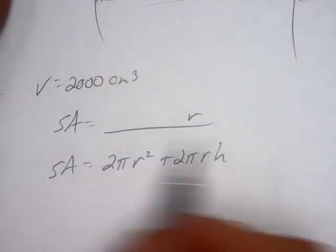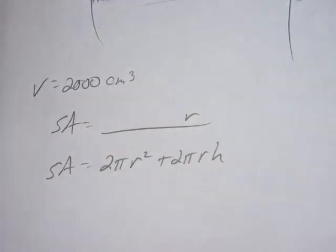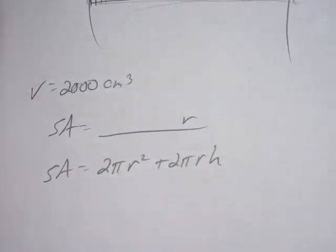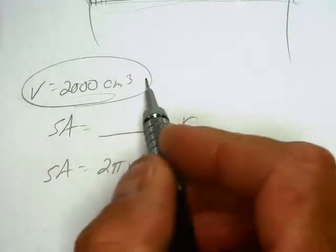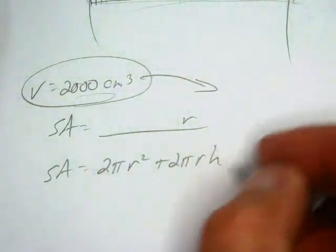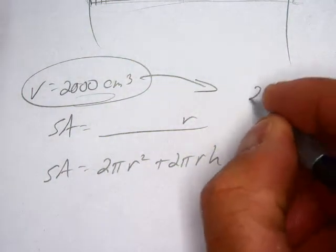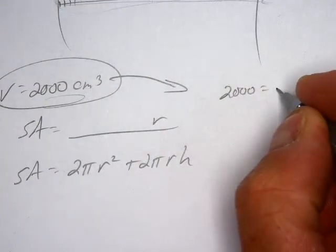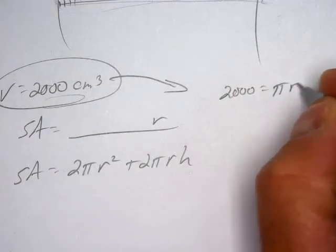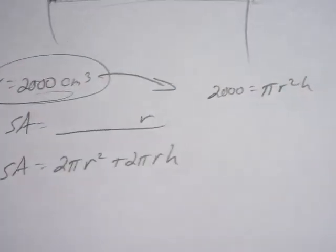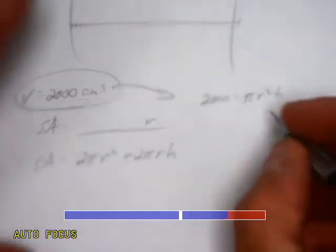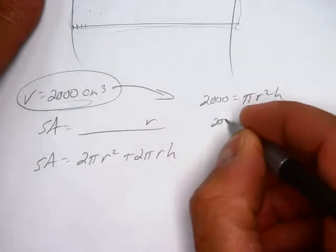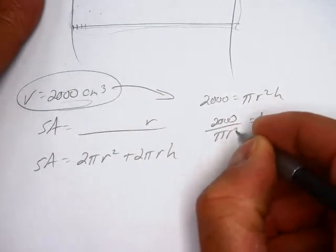So I want it just in terms of radius only. So what do I got to get rid of? H. So let's go back up here to the equation that we have not used yet, and we're going to relate r and h. So 2,000 equals the volume of my cylinder, which is pi r squared h. Solve for h. So h equals 2,000 over pi r squared.